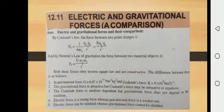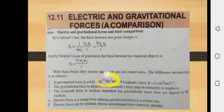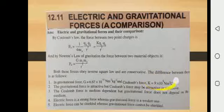The differences between these two forces: Number one — in gravitational force, the value of the constant of proportionality G is 6.67 × 10⁻¹¹ N·m²/kg². In the case of Coulomb force, the constant K has a value of 9 × 10⁹ N·m²/C².